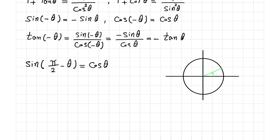Assume this angle is theta. This is the cosine axis and this is the sine axis. The right-hand side of the identity, cosine of theta, is this value. On the left side, we have pi over 2 minus theta. We know that pi over 2 is this angle.